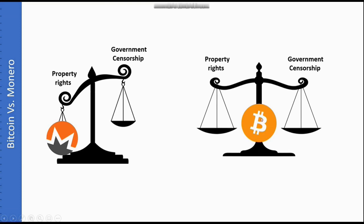Bitcoin is a decentralized currency that balances government censorship resistance with property rights. If you hold Bitcoin and keep your private keys secure, that Bitcoin belongs to you — nobody can take it. The only limitation is that Bitcoin transactions can be tracked on the blockchain, as every transfer is recorded. This brings us to Monero, which essentially zeroes out government censorship and tracking ability — making it mathematically impossible, through encryption, for third parties to monitor transactions.